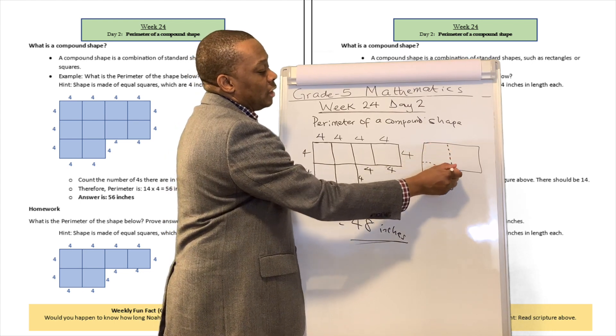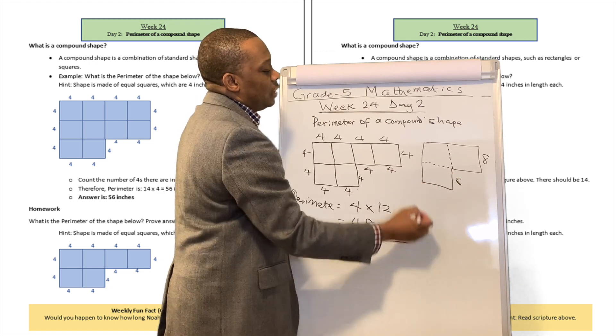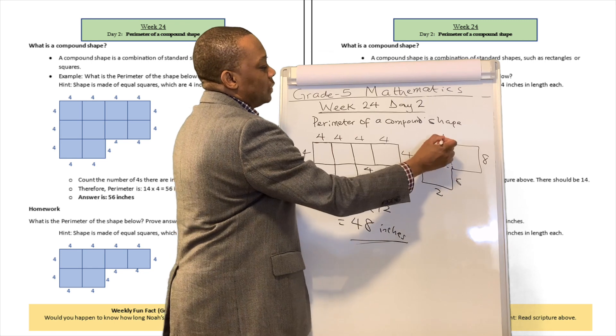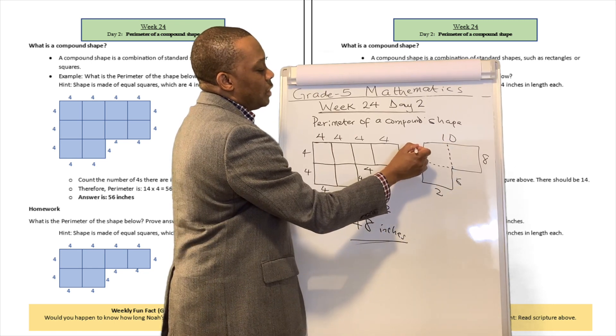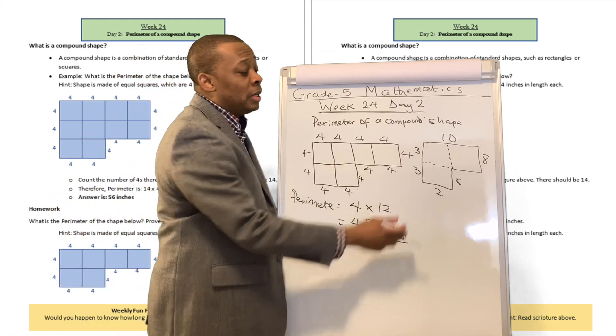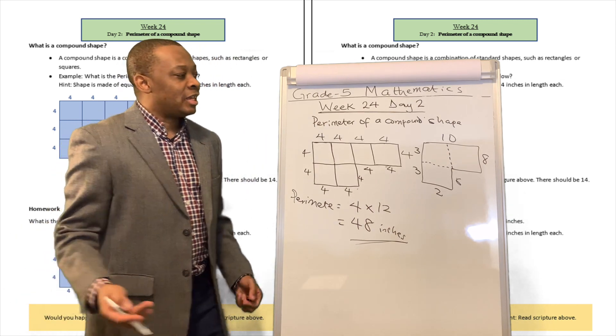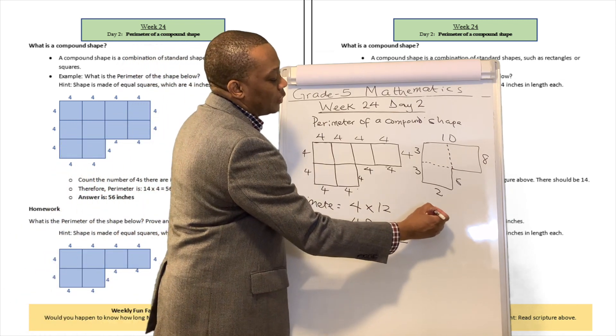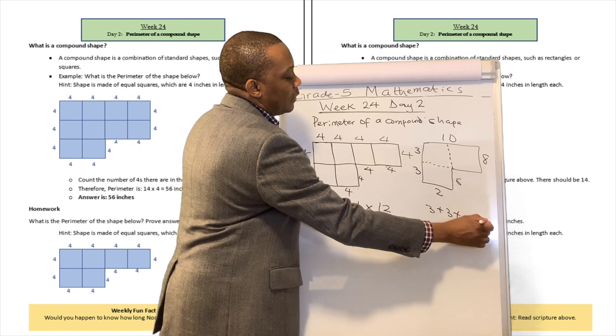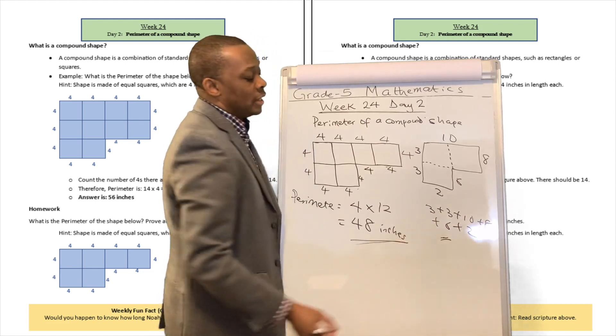If we're given another thing like this, and they were to tell us maybe this is 8, and maybe this is 6, and maybe this is 3, maybe this is 2, and maybe this is 10, or maybe this is going to be another 3. Well, what is the perimeter of a shape like this? Well, go ahead and add it together, because all the sides are not equal in this case. So we're going to say 3 plus 3 plus 10 plus 8, and then plus 6, and plus 2. Well, what does that give us?